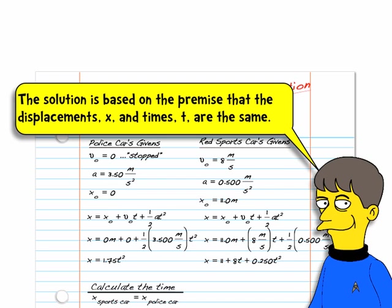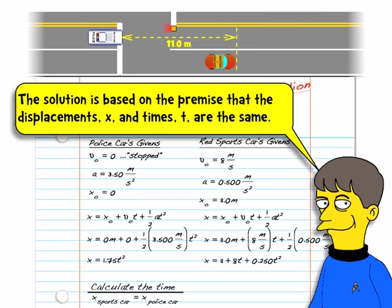But we still need to stick to this premise of distance and time being the same. But for this problem, you can see that the distance and time isn't the same. The red sports car has an 11-meter jump. So I need to make the distance that both cars travel between the beginning and when they're side by side the same.